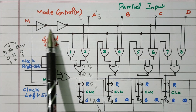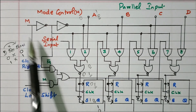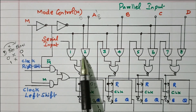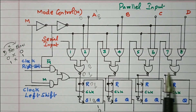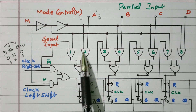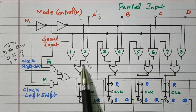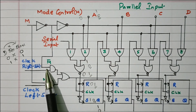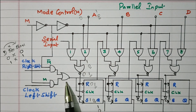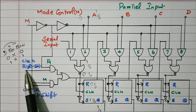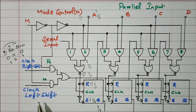In order to perform three different operations, we have a mode control signal M. In the logic diagram, two AND gates and one NOT gate are available, connected to all the flip-flops. This logic circuit is connected to control the clock signal as well. We also have two AND gates and one OR gate used for clock right-shift and clock left-shift.